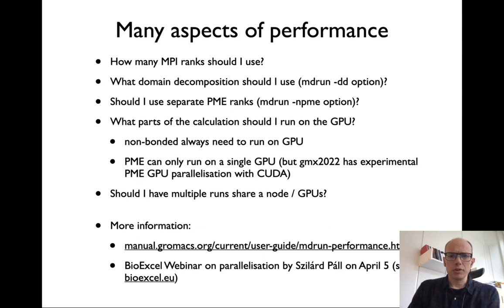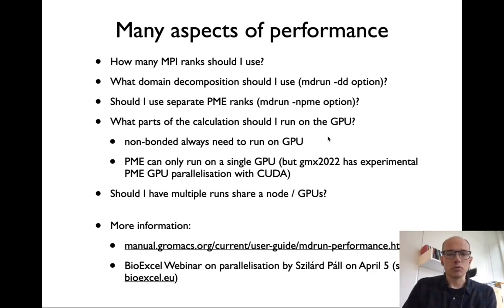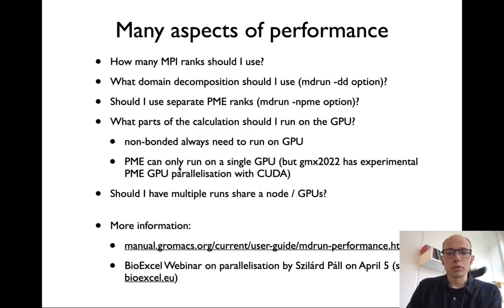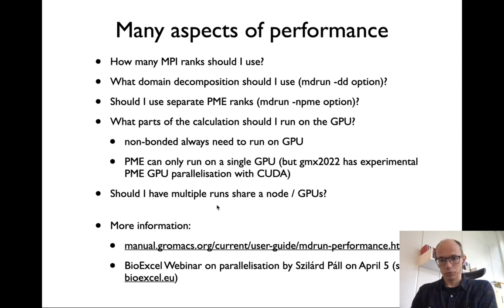To conclude, there are many aspects to consider for GROMACS performance: how many MPI ranks to use, what domain decomposition to use (the '-dd' option), whether to use separate PME ranks ('-npme'), and what parts of the calculation to offload to the GPU. Bonded interactions must always run on the GPU, but for other components you can check 'mdrun' help options. PME currently can only run on a single GPU, though in the 2022 release there is experimental CUDA PME GPU parallelization that promises significant improvements. Running multiple simulations sharing a node or GPUs can also improve overall throughput.